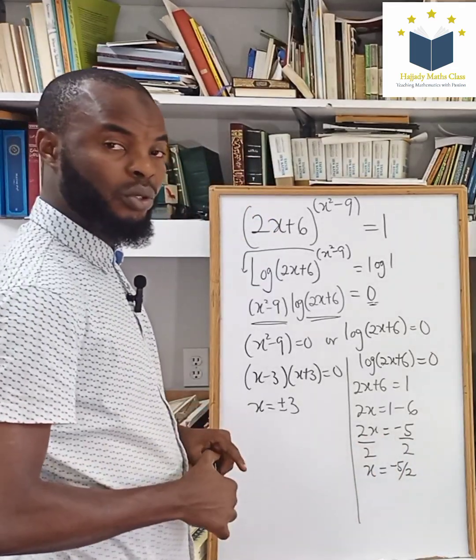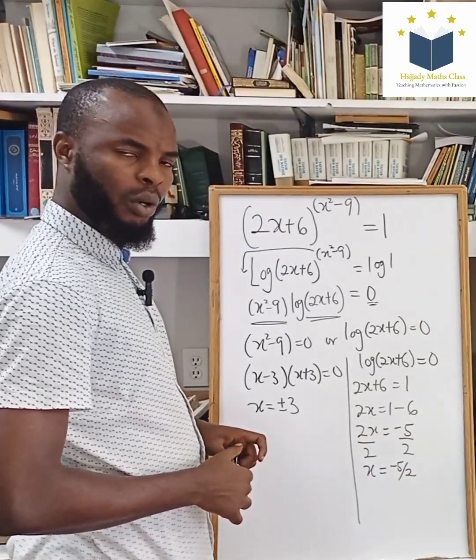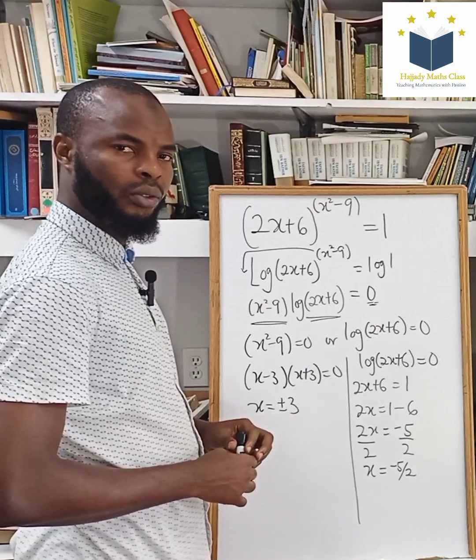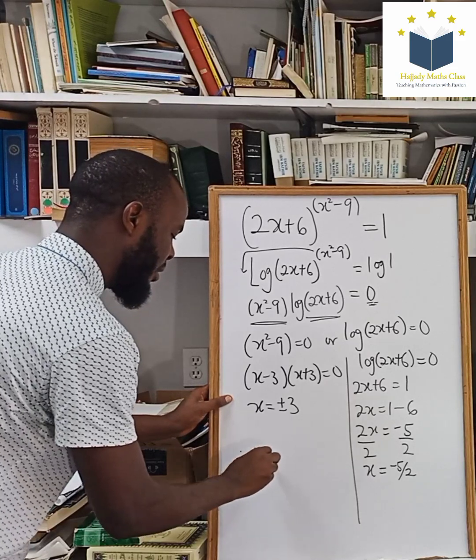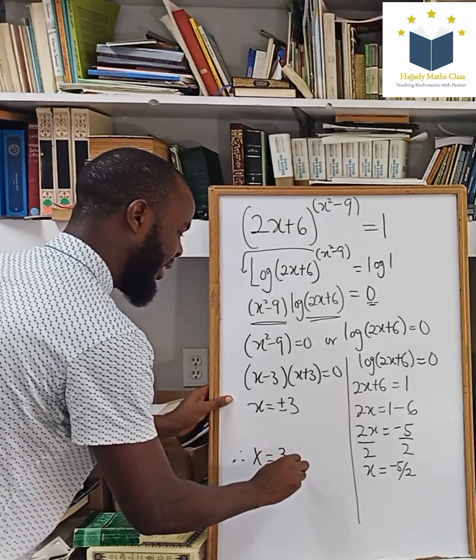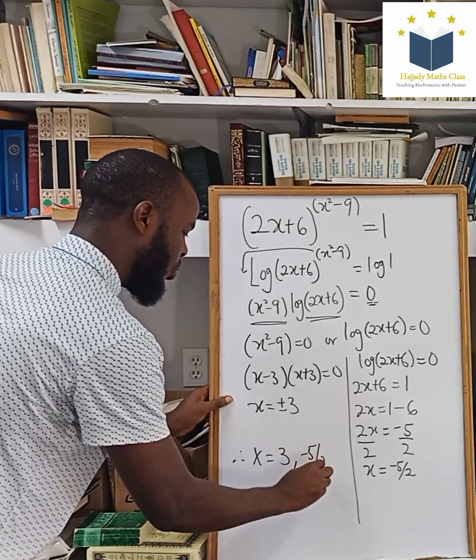Now looking at this, we've gotten 3 solutions for x. But we need to confirm if all the 3 solutions are valid. Here, I can say, finally, my x equals to positive 3 and negative 5 over 2. Why?